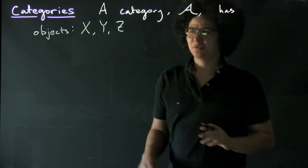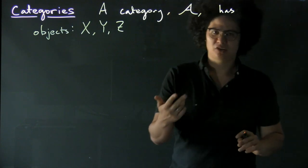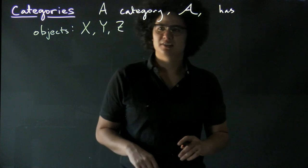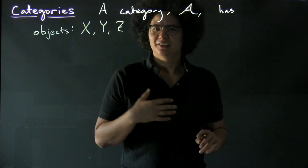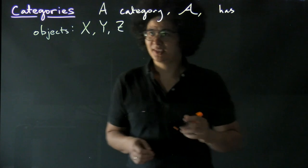For example, the categories that we have looked at—set, group, and top—are all instances where the collection of objects doesn't form a set.